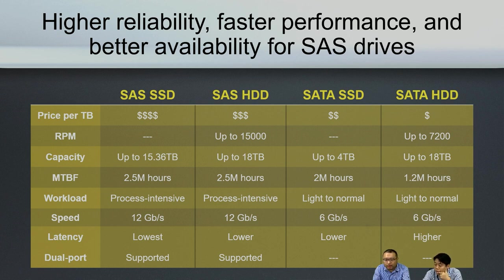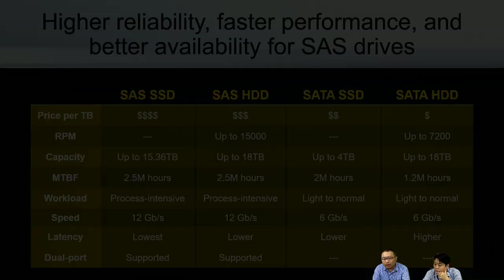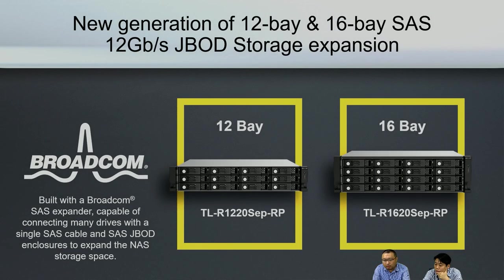Furthermore, if you are using a dual-controller server, definitely go with SAS because it has dual-port support. Now let's get into today's J-Bar models. These are the two models launching this month: the 12-bay and 16-bay TL or SAS J-Bar. You'll see the model name includes "SEP" — EP stands for expander technology. Some J-Bars on the market are priced cheaply, but you can only connect one J-Bar because they're missing the expander inside.